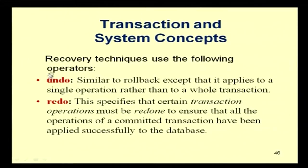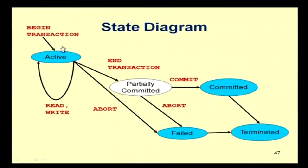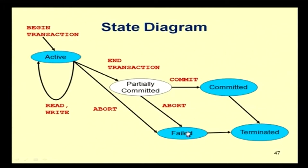Recovery techniques use undo — similar to rollback except it applies to a single operation rather than the whole transaction — and redo, which ensures that all operations of a committed transaction have been applied successfully to the database. In the state diagram: the transaction begins in the active state, executes its sequence of read/write operations while remaining active, and upon reaching the end transaction statement it moves to the partially committed state. If an error occurs in the middle, the transaction goes to the failed state.